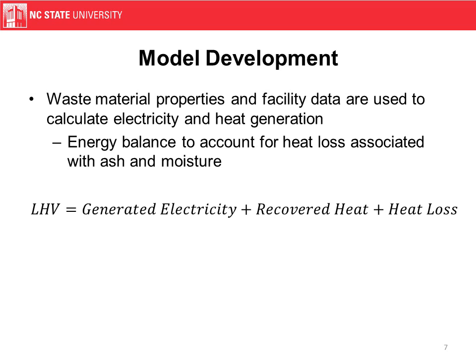In our model, we use waste material properties and facility data to calculate both electricity and heat generation. One of our primary mechanisms for doing that is an energy balance. The lower heating value encompasses the energy going into the system in the waste. It's equal to the generated electricity plus the recovered heat plus the heat loss. Heat loss can occur from the moisture coming in or with the ash going out, as well as general inefficiency in the system.